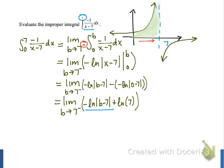Our next step is to consider what will happen to the quantity negative natural log of the absolute value of b minus 7, as b gets closer to 7. As b approaches 7 from the left, the absolute value of b minus 7 is going to get closer and closer to 0. Then the natural log of that value, of the absolute value of b minus 7, is going to get closer and closer to negative infinity, because the graph of the natural log of x has a vertical asymptote as x approaches 0.